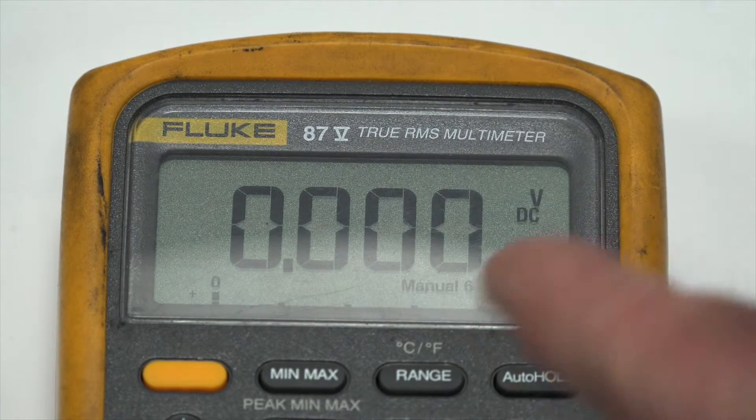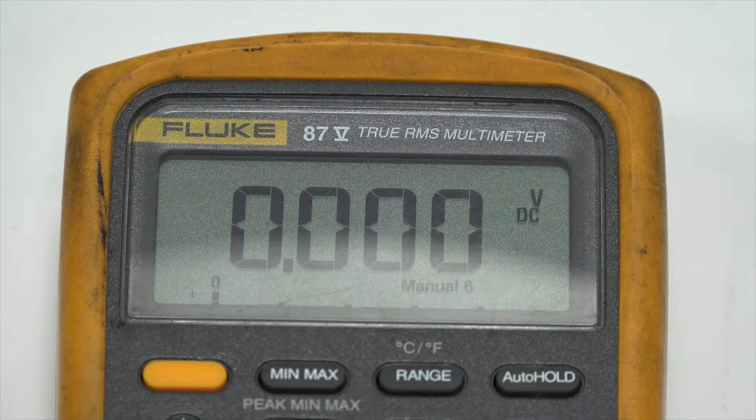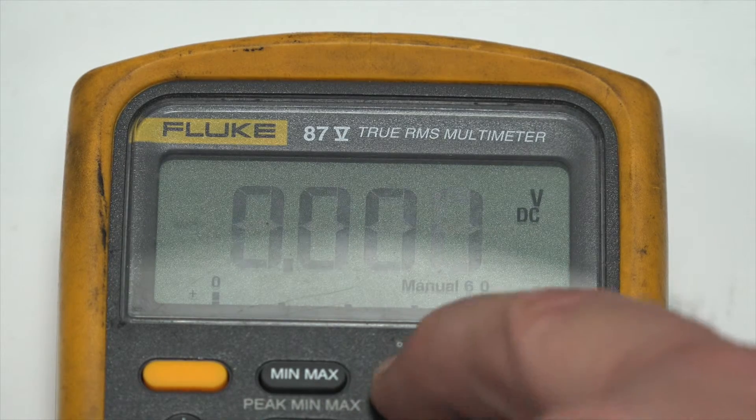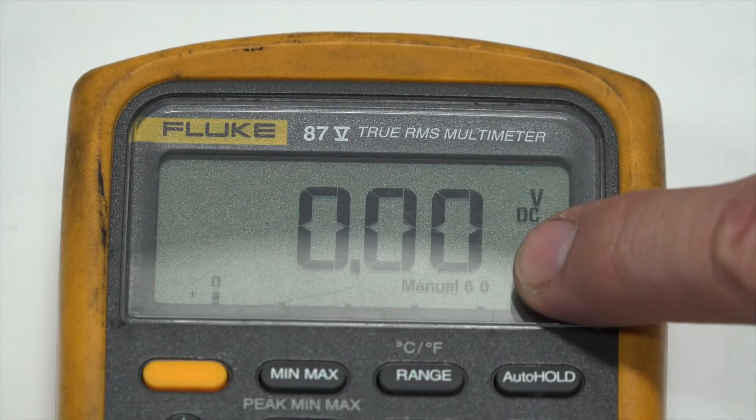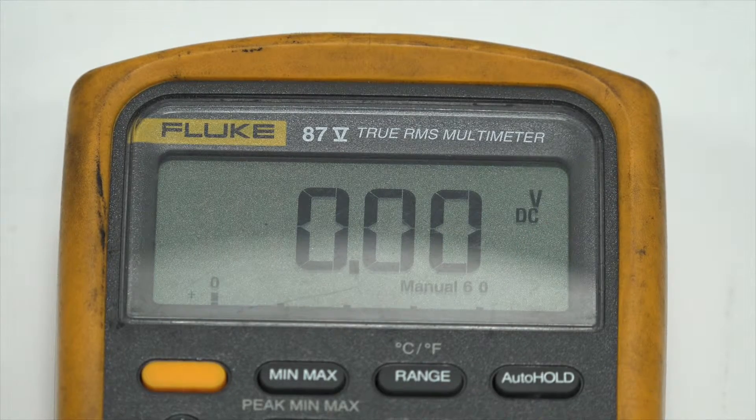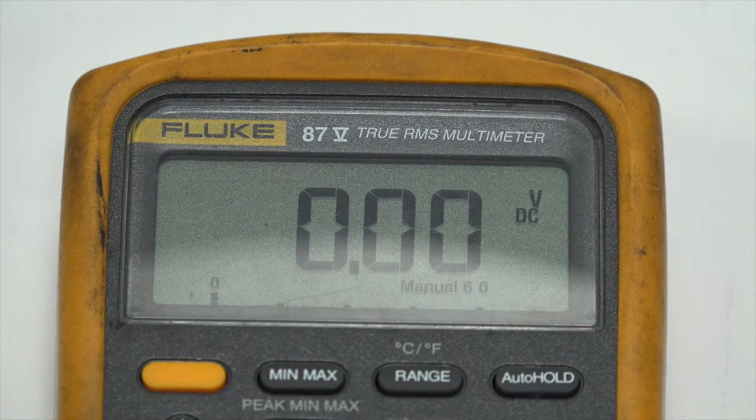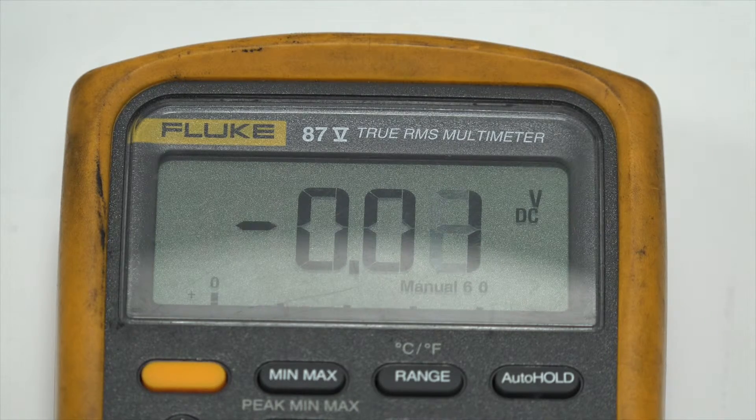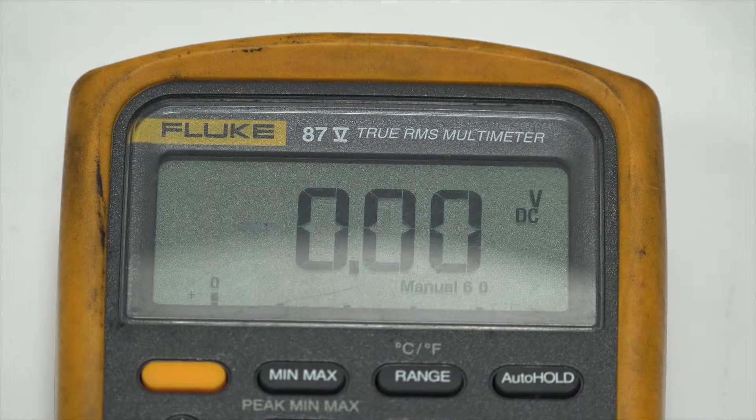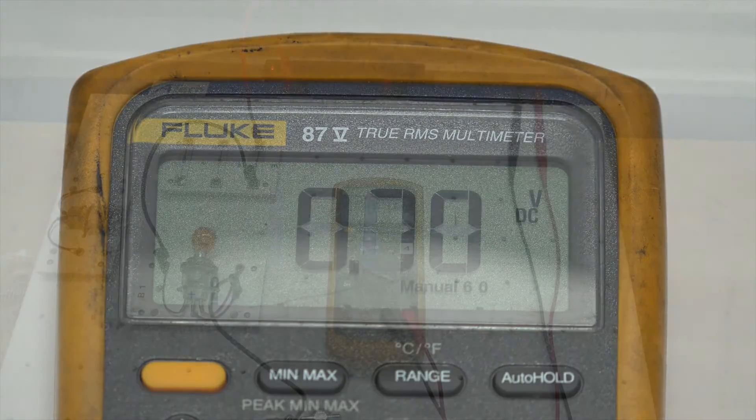We're at manual six. This is a 12 to 14 volt system here. I'm going to hit range again. Now, I'm set for 60 volt maximum. And when I check the voltage again, it is already in the range. So we're not going to see the OL as it tries shifting gears here, so to speak.